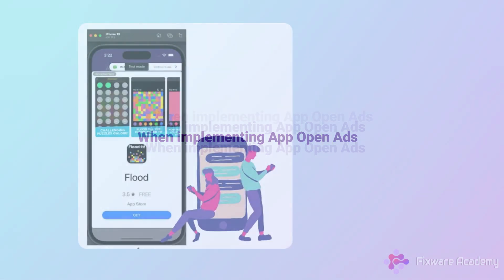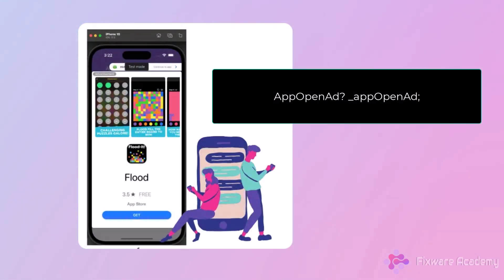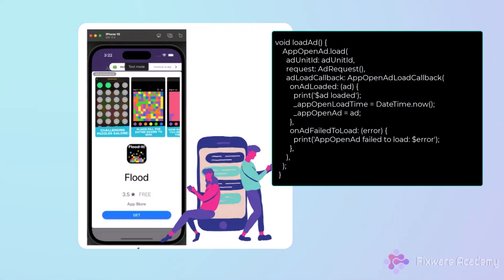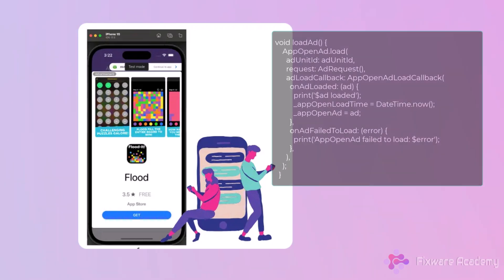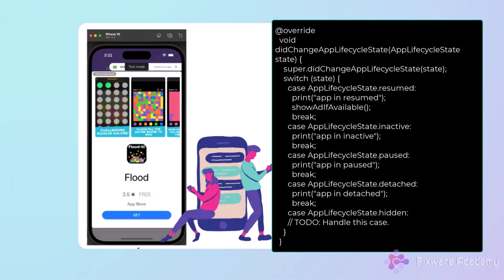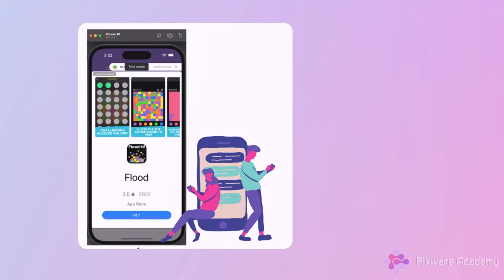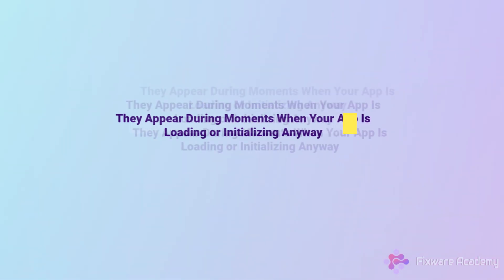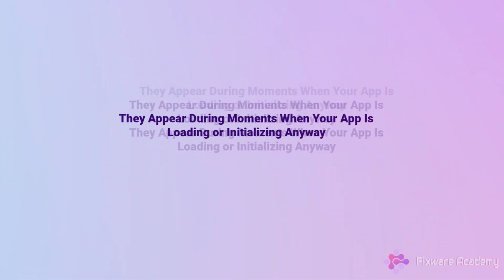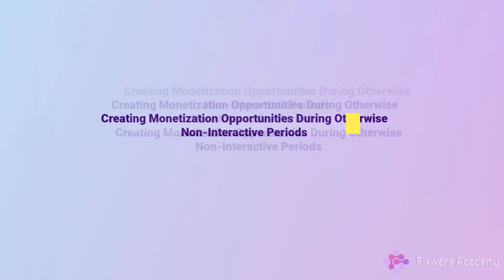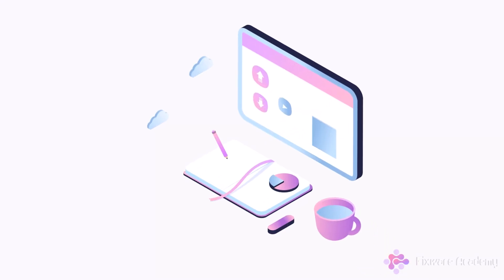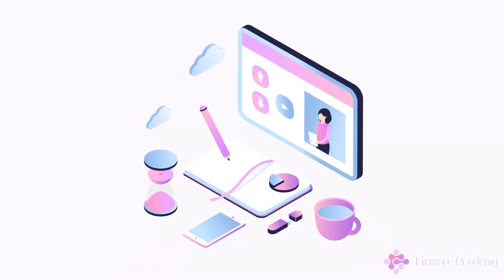When implementing App Open Ads, your code will need to: initiate the App Open Ads manager during app setup, load the ad in advance for instant display when needed, show ads during appropriate lifecycle events, handle user return from background states, and respect minimum intervals between ad displays. What makes App Open Ads special is their timing — they appear during moments when your app is loading or initializing anyway, creating monetization opportunities during otherwise non-interactive periods. They are designed to be lightweight and quick to display, ensuring they don't add significant delay to your app's actual launch time.